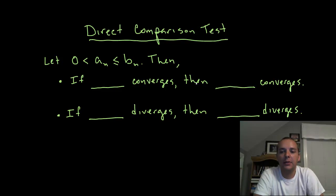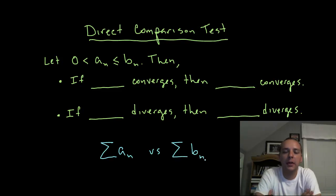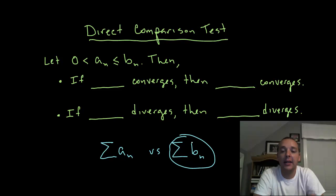If blank converges then blank converges. We have two quantities here: the sum of a_n versus the sum of b_n. If we add up the terms of the larger series and it converges, then what does that say about the convergence of the smaller series? Well, I think that means that series would have to converge as well. If the sum of b_n converges, then surely if you add up the smaller terms you'll also get a finite quantity.